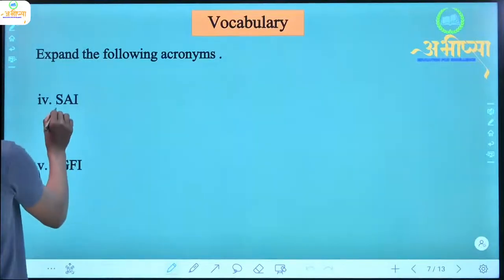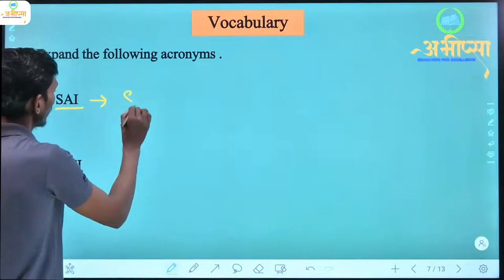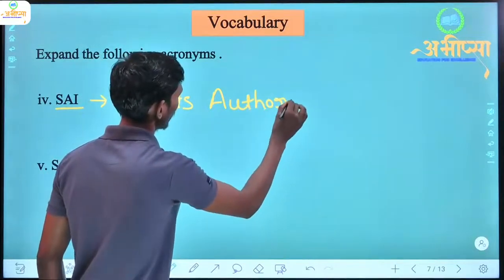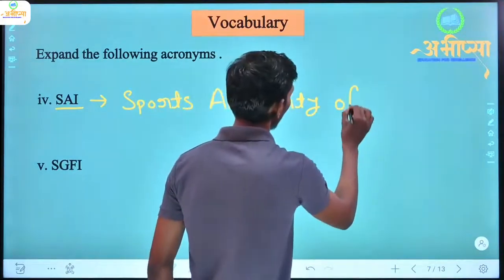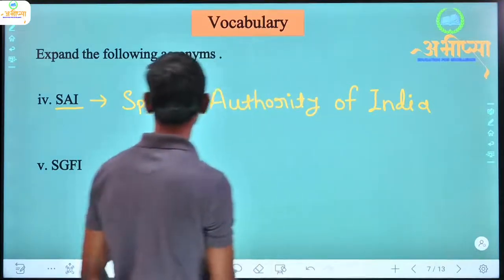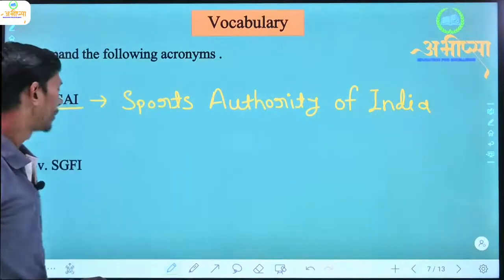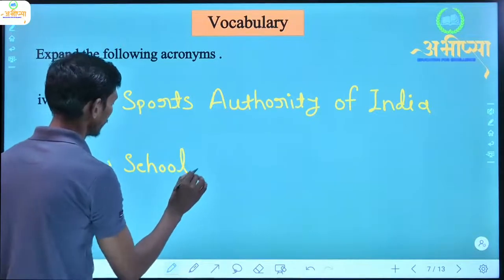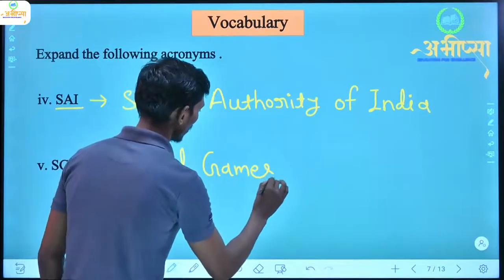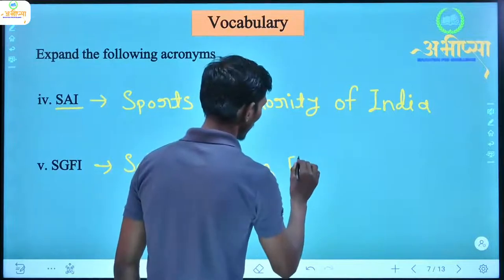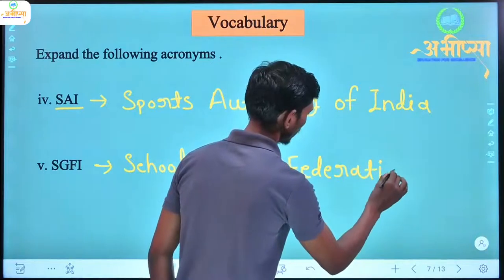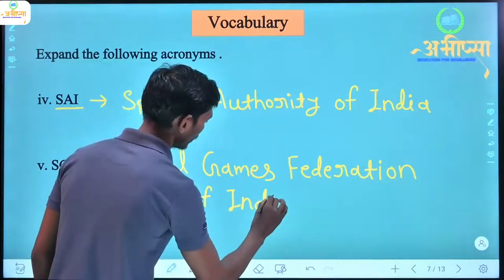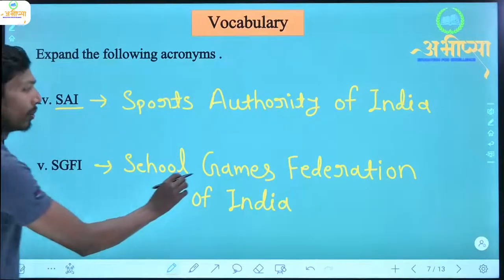Similarly, SAI — what will be its full form? S stands for Sports, A stands for Authority, I stands for of India. So SAI stands for Sports Authority of India. And SGFI — what will be its full form? S stands for School, G stands for Games, F stands for Federation, I stands for of India. So SGFI stands for School Games Federation of India.